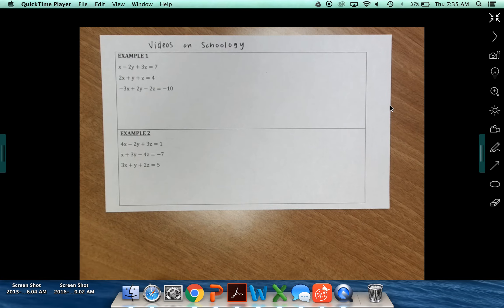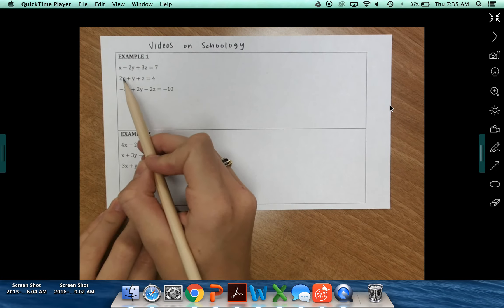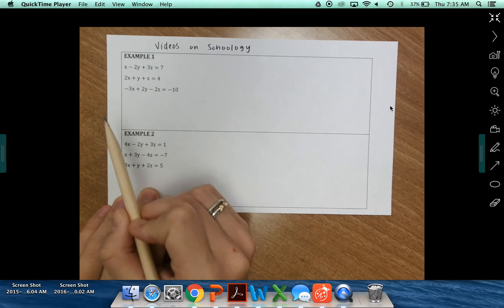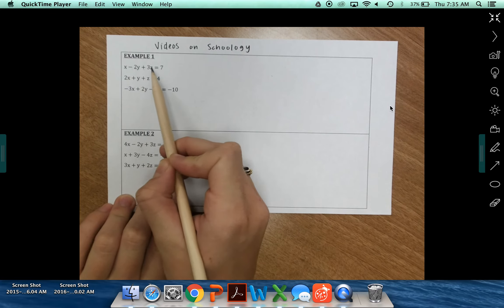Okay, so looking at example one, we've got our one, two, three equations here with our three different variables. So we're working with X, Y, and Z.